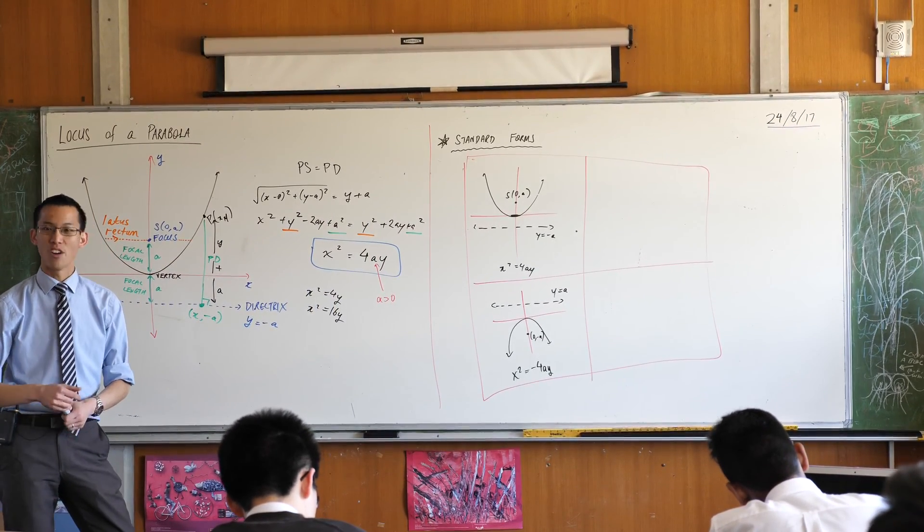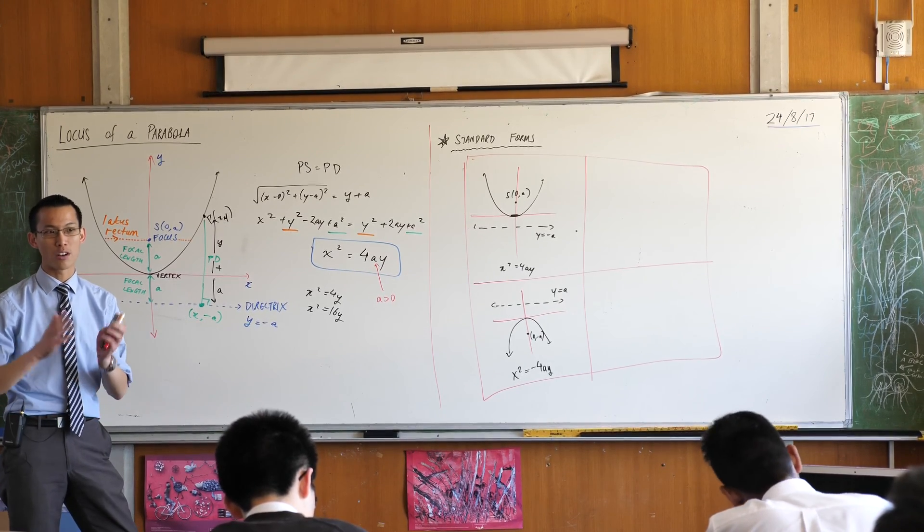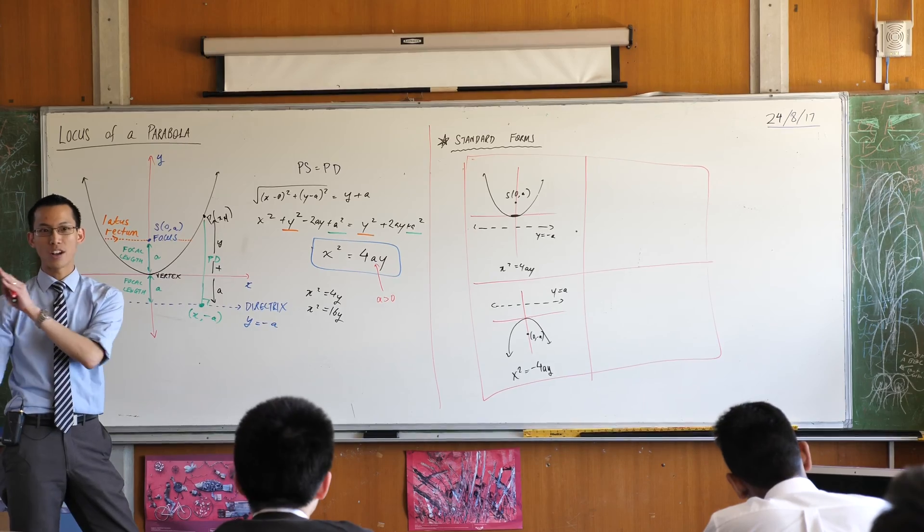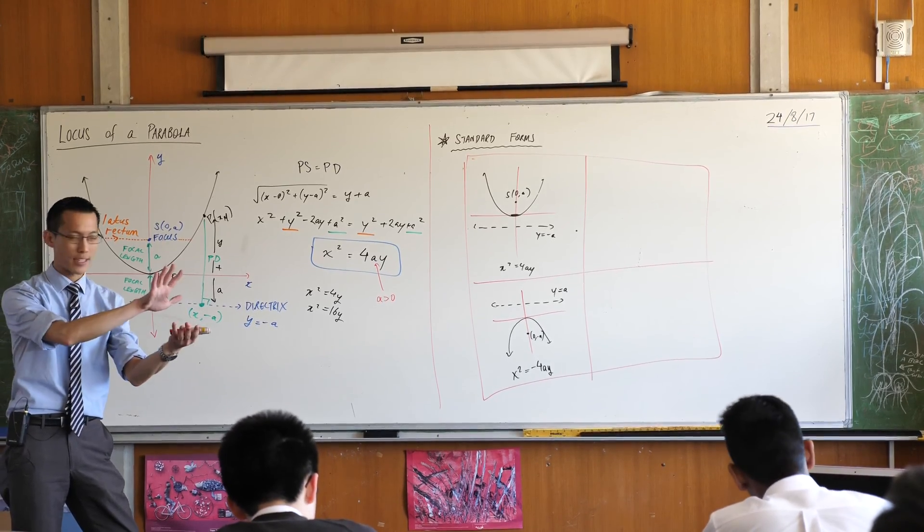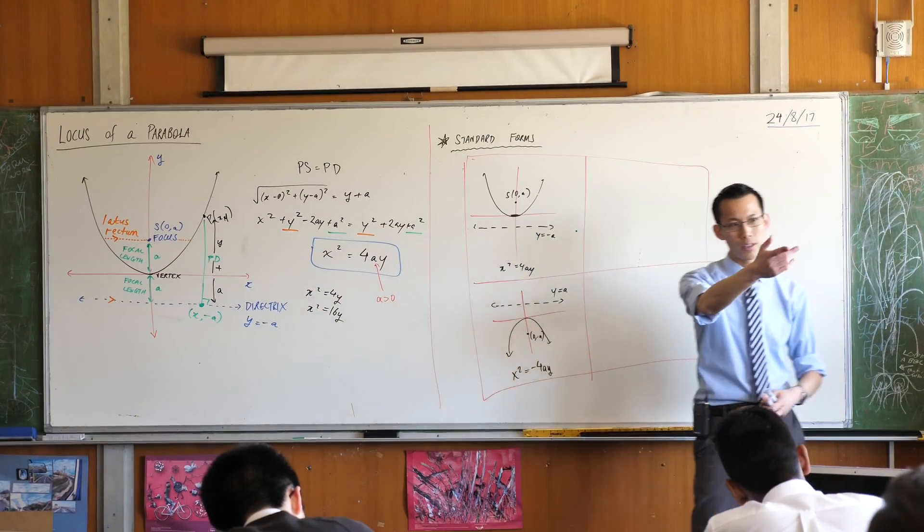Concave up and concave down are not the only directions on our Cartesian plane. We can of course have concave left and concave right. How would we make things face left-right instead of up-down? What would we do?